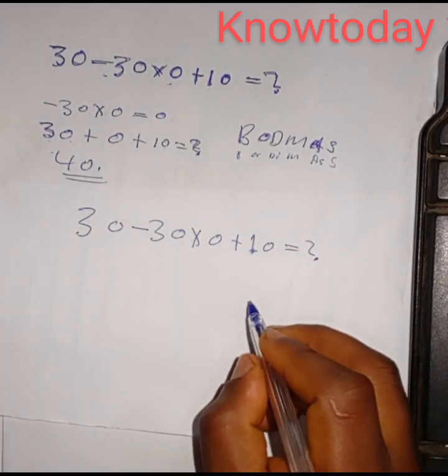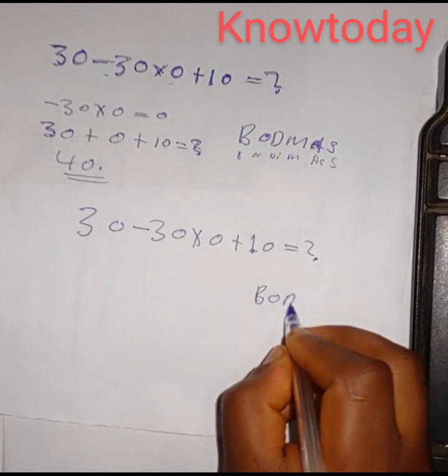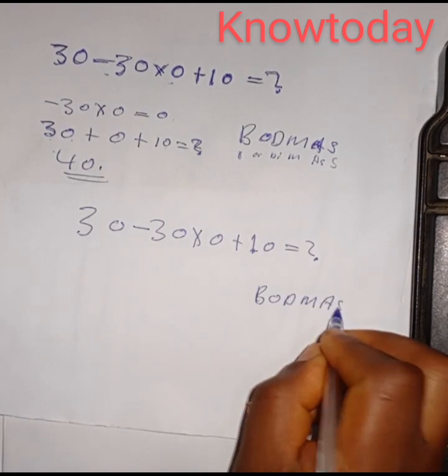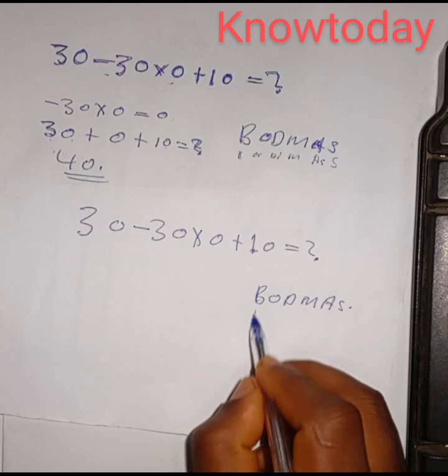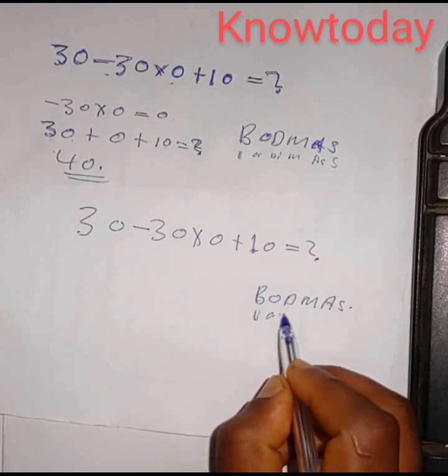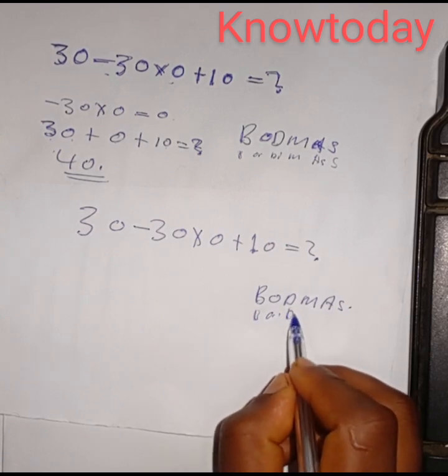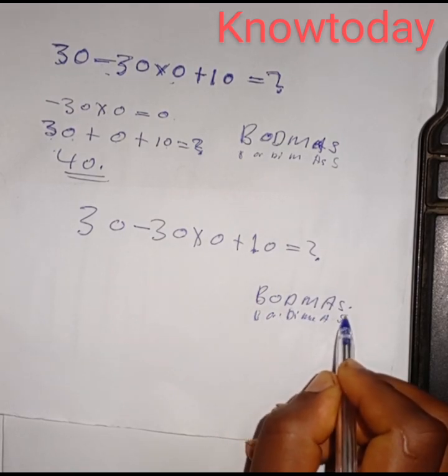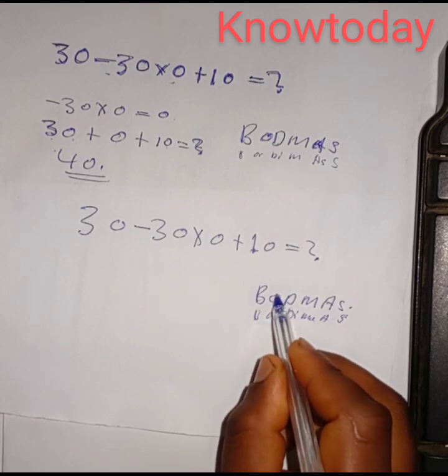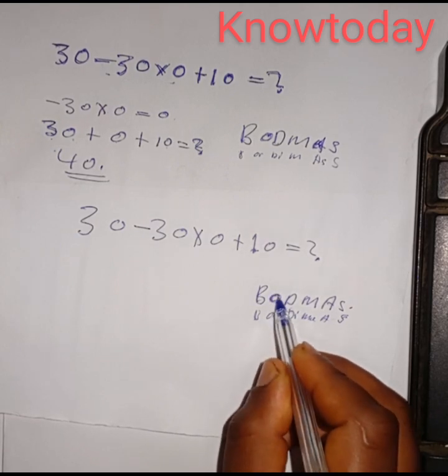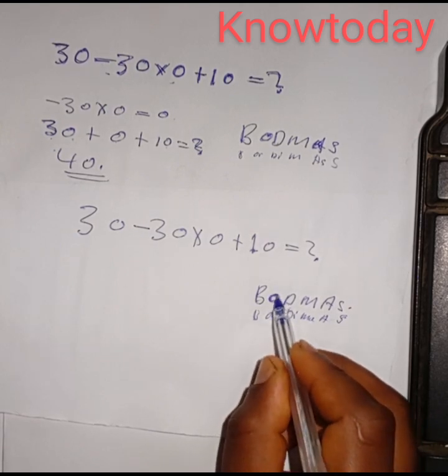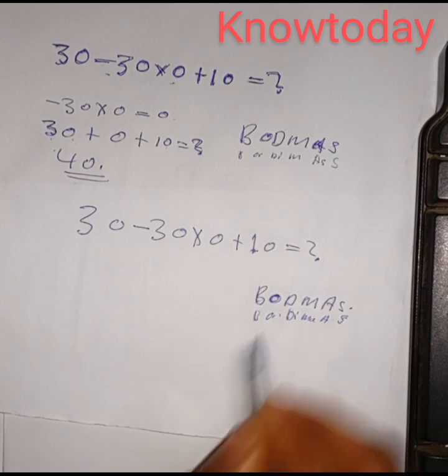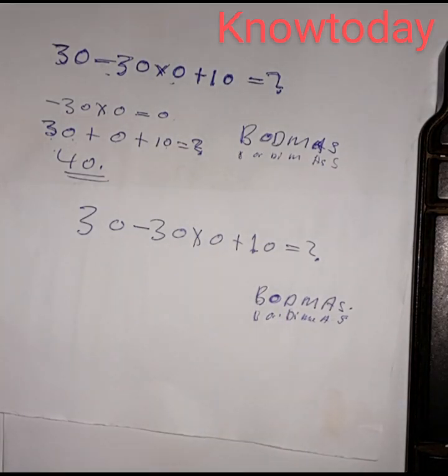Okay, so for us to solve this problem we need to apply the law of BODMAS. BODMAS stands for Brackets, Order of operation, Division, Multiplication, Addition, and Subtraction. Many people mistake this O for multiplication—it's not multiplication, it's order of operation, according to BODMAS.